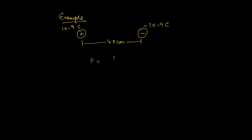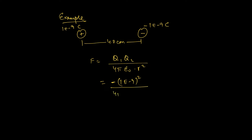Let's write out our equation: force equals Q1 Q2 divided by 4 pi epsilon naught times R squared. In this case you're going to have 1.9 times 10 to the negative 9 squared, but because one of them is negative, you're going to have a negative sign out here. Divided by 4 times pi times epsilon naught — 8.85 times 10 to the negative 12 — times the distance between the particles, which is 0.04 meters, squared. When you calculate all of that out, you get 5.6 times 10 to the negative 6 Newtons as the force between the charges.